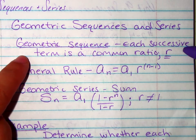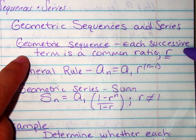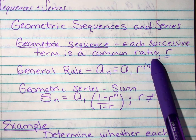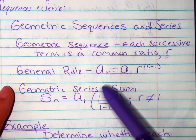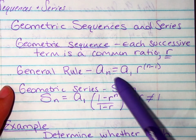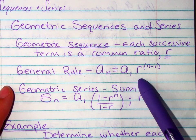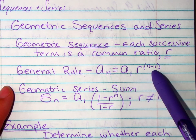So remember for arithmetic we were doing the difference with a D. Geometric we're going to do a ratio with an R. Our general rule is a sub n equals a sub 1 times the ratio raised to the n minus 1.